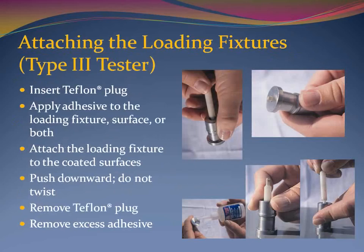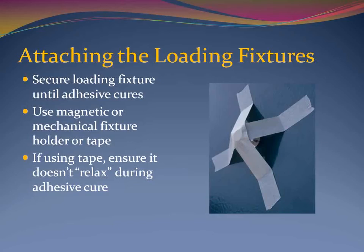To attach the Type 3 loading fixtures, insert the small diameter Teflon plug through the center hole of the stainless steel fixture until the small tip of the plug protrudes from the contact surface. Using the adhesive dispenser bottle or a wooden stick, apply an even layer of adhesive to the entire contact surface of the fixture. Attach the fixture to the coated surface and gently push downward to displace any adhesive. Remove the Teflon plug from the center of the fixture and remove any adhesive that has accumulated on the end of the plug. The ASTM standard recommends applying constant pressure on the fixture until the adhesive sets. This is particularly important when the fixtures are attached to vertical surfaces, as they will likely slide down the surface before the adhesive has an opportunity to set. A magnetic or mechanical device may be used, however adhesive tape is more common. If tape is used, it should be routinely inspected to ensure it doesn't relax over time and allow air to enter the fixture-to-surface interface.